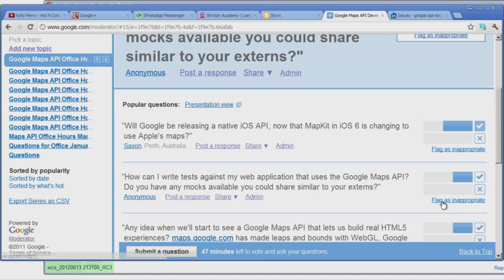So the next question is, will Google be releasing a native iOS app now that MapKit in iOS 6 is changing to use Apple's Maps? We don't tend to talk about things we're going to be doing before we do them. So we can't really comment on what our future plans are. We're, of course, always interested in mobile platforms, particularly Android and iOS. So we can't tell you what our future plans are at this point. But thanks for asking that.